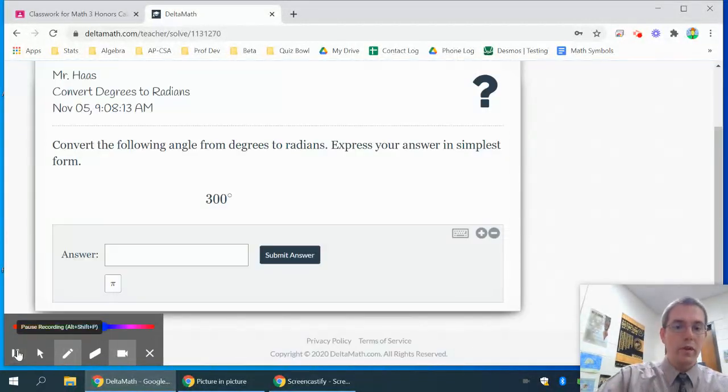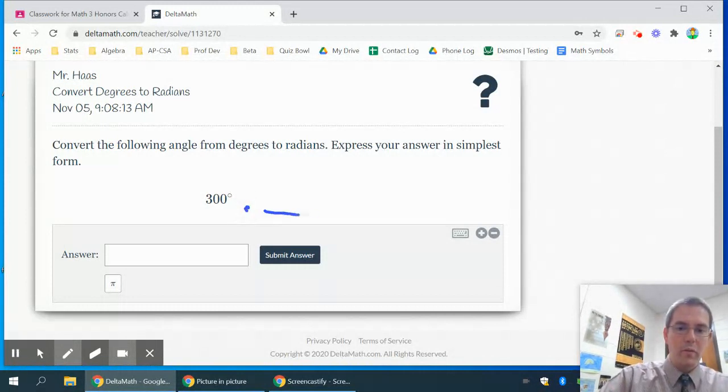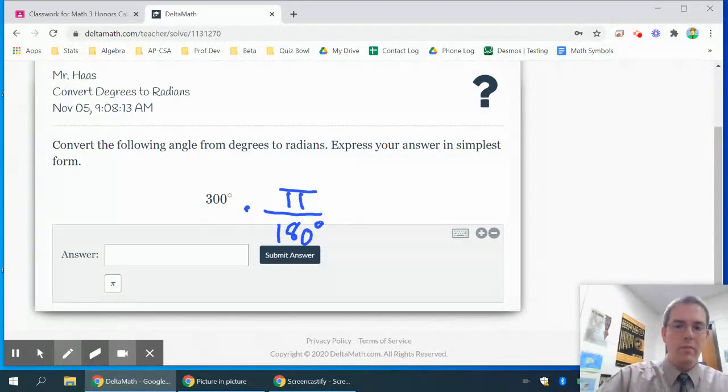This one, I'm going from degrees to radians. So I'm still using my unit fraction, but this time, since I want my answer in radians, radians needs to be on top. So π radians is 180 degrees. And putting the degrees on the bottom also will cause the degrees to cancel.